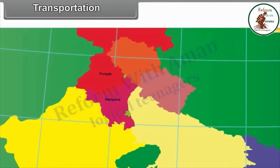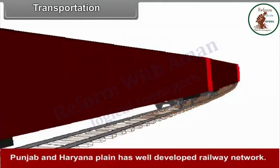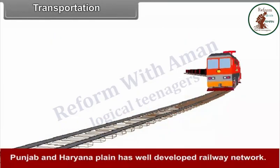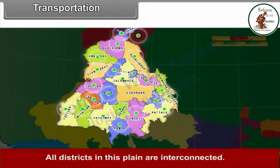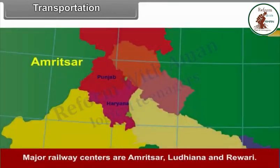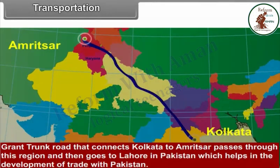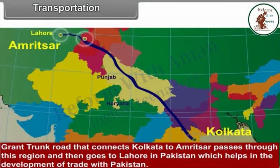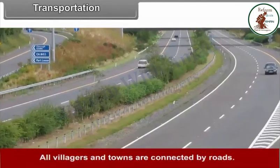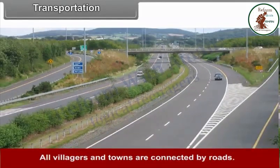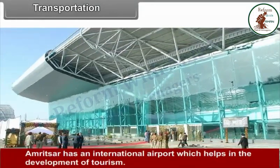Transportation: Punjab and Haryana plain has a well-developed railway network. All districts in this plain are interconnected. Major railway centers are Amritsar, Ludhiana and Rewari. The Grand Trunk Road, which connects Kolkata to Amritsar, passes through the region and then goes to Lahore in Pakistan, helping in the development of trade with Pakistan. All villages and towns are connected by roads. Amritsar has an international airport which helps in the development of tourism.